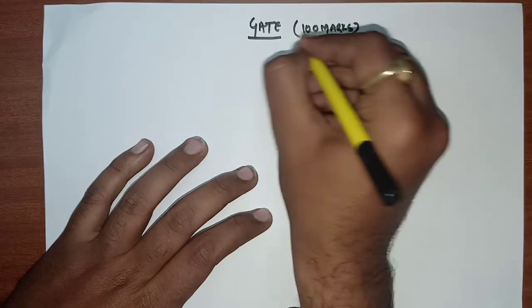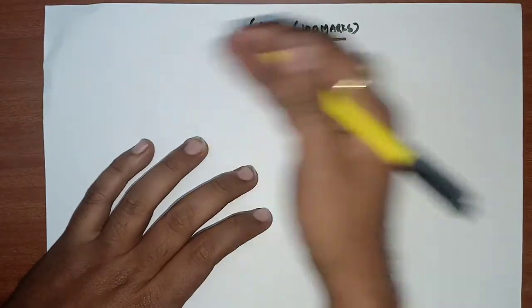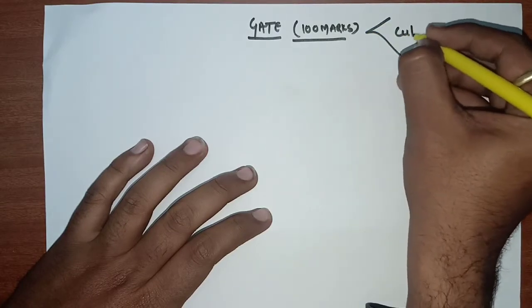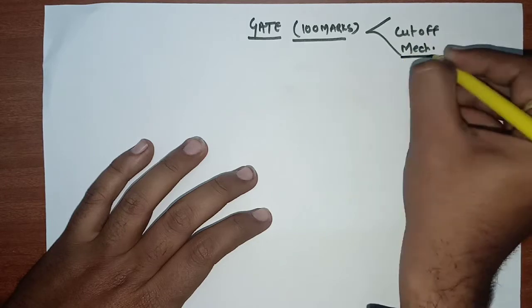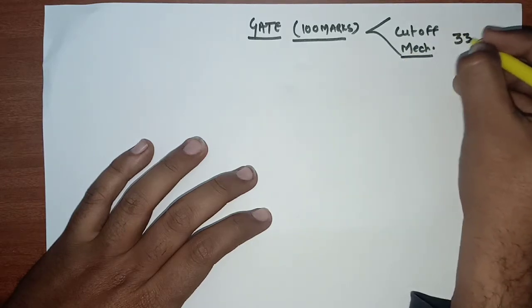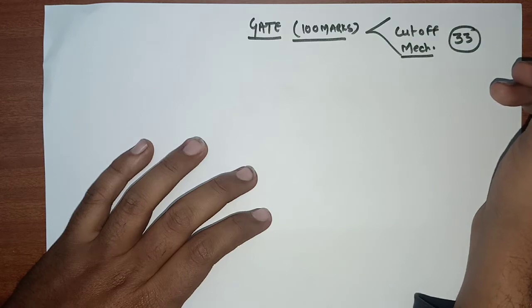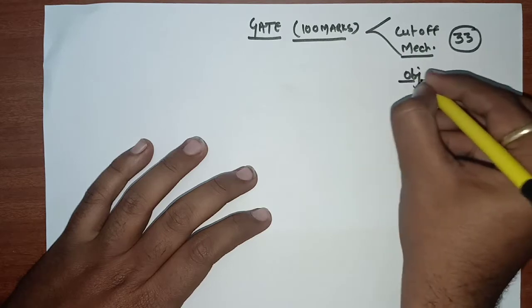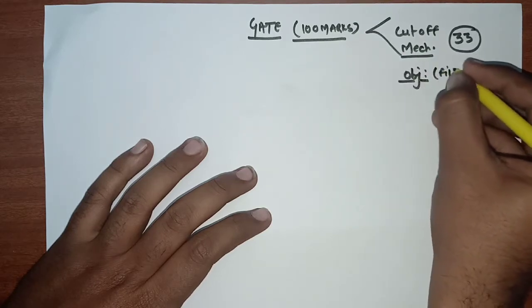We need to know how to clear it in 20 days. First, let's talk about the cut-off for GATE Mechanical. The cut-off is approximately 33 marks — last time it was 32.96. When objective type, conventional type, and fill-in-the-blank questions started, the cut-off has increased.